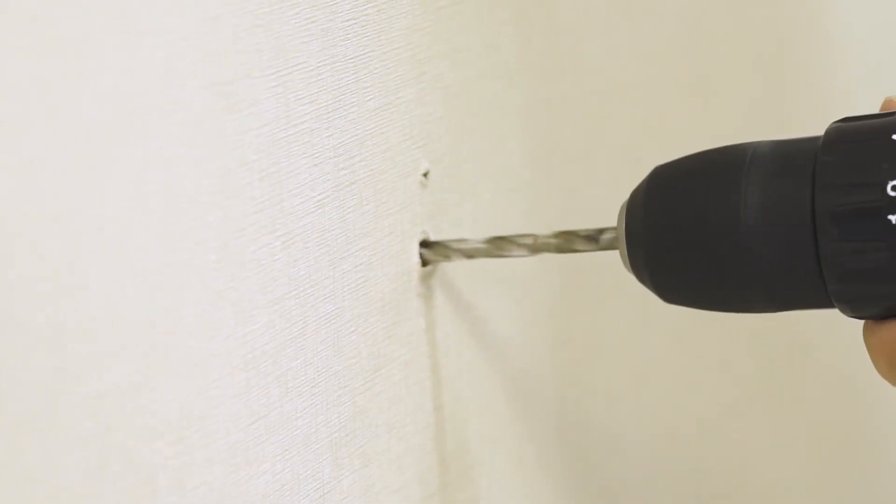Remove the wall mount bracket and drill two holes on the marks using a 7/32nd drill bit.